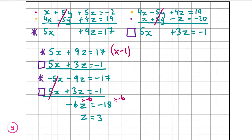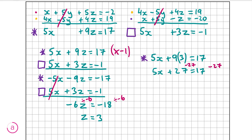To find x, I'm going to substitute z equals 3 back into equation star. We get 5x plus 9 times 3 equals 17, which is 5x plus 27 equals 17. Subtracting 27 from both sides gives 5x equals minus 10, and dividing both sides by 5 gives x equals minus 2.